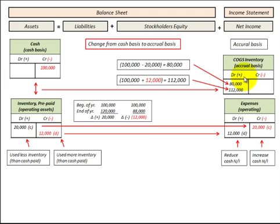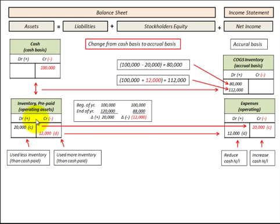To summarize, we're able to determine our revenue and expenses on an accrual basis simply by making a balancing entry, either as a debit or credit. That balancing entry reconciles what's in our cash account with either the change in our assets or the change in our liabilities. Thank you.